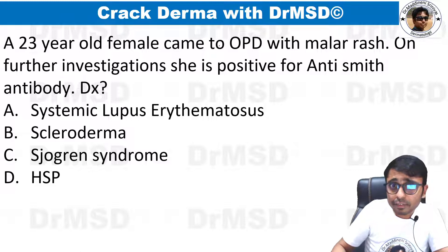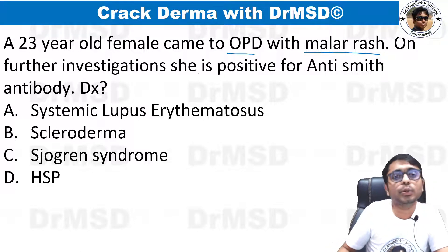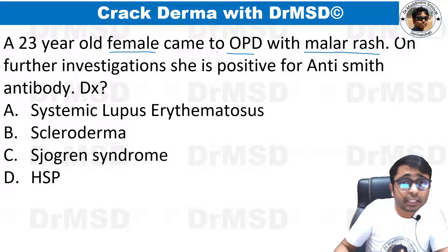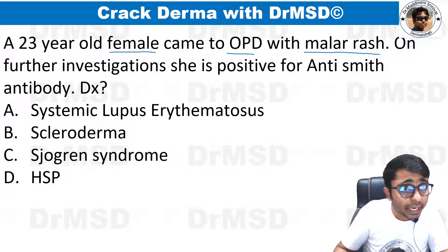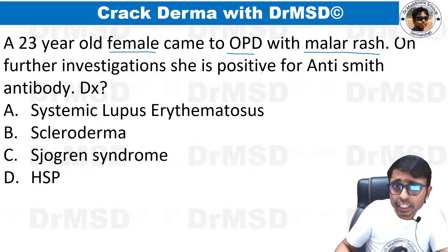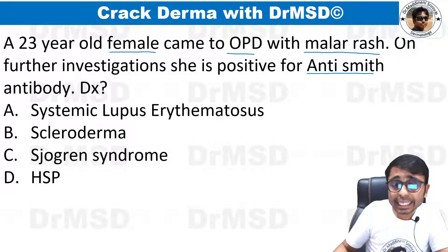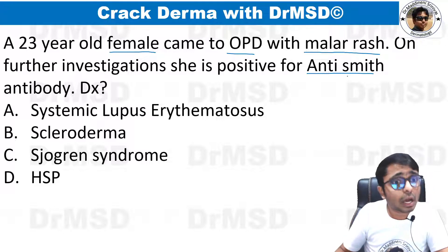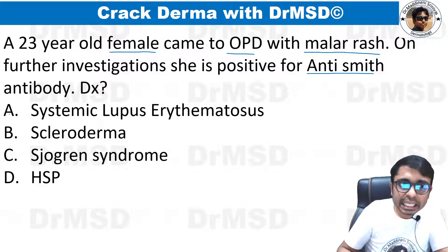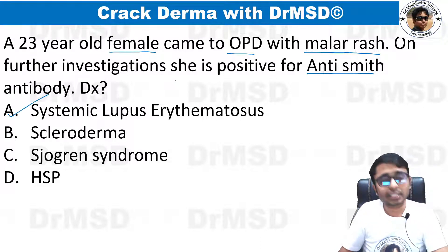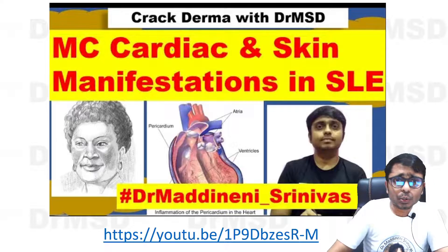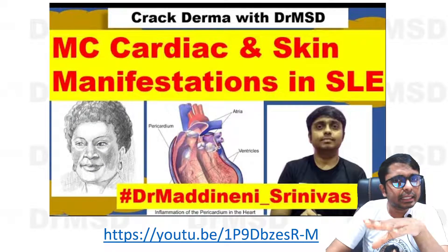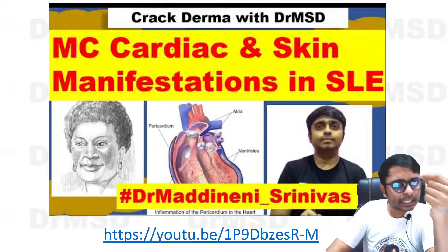A 23-year-old female came with a malar rash and tested positive for anti-Smith autoantibodies. The diagnosis is systemic lupus erythematosus (SLE) — straightforward with these clues.